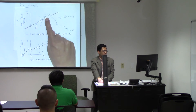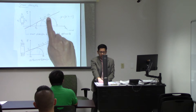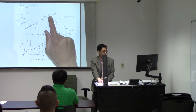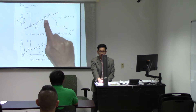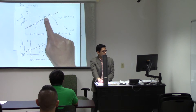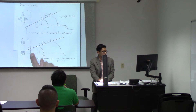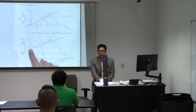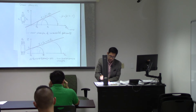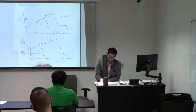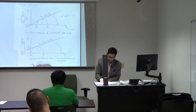Why do we have here a slope? Because of friction — shear strength is proportional to normal stresses because of friction. Why do we have now this intercept not equal to zero? Because of cementation. And this one is called cohesive strength.